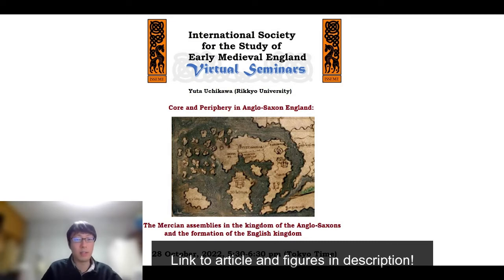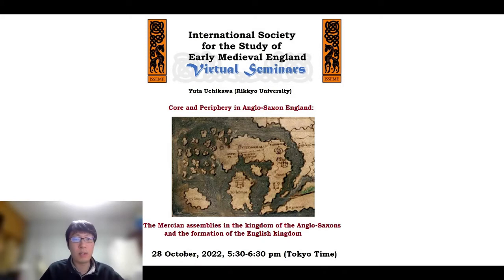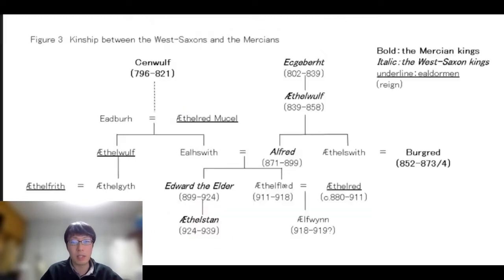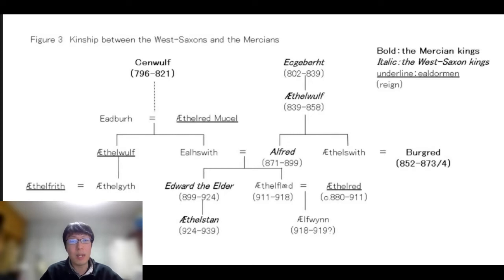England was gradually formed in the 9th and 10th centuries by the West Saxon kings. After the invasion of the Vikings began in the late 8th century, King Ecgberht of Wessex took control of other Anglo-Saxon kingdoms in the southeast from Mercia. After succeeding in repulsing the Vikings, Ecgberht's grandson Alfred created the kingdom of the Anglo-Saxons by forging a firm connection with the Mercians themselves. He entrusted the remnant of Mercia to a certain alderman called Æthelred, lord of the Mercians.